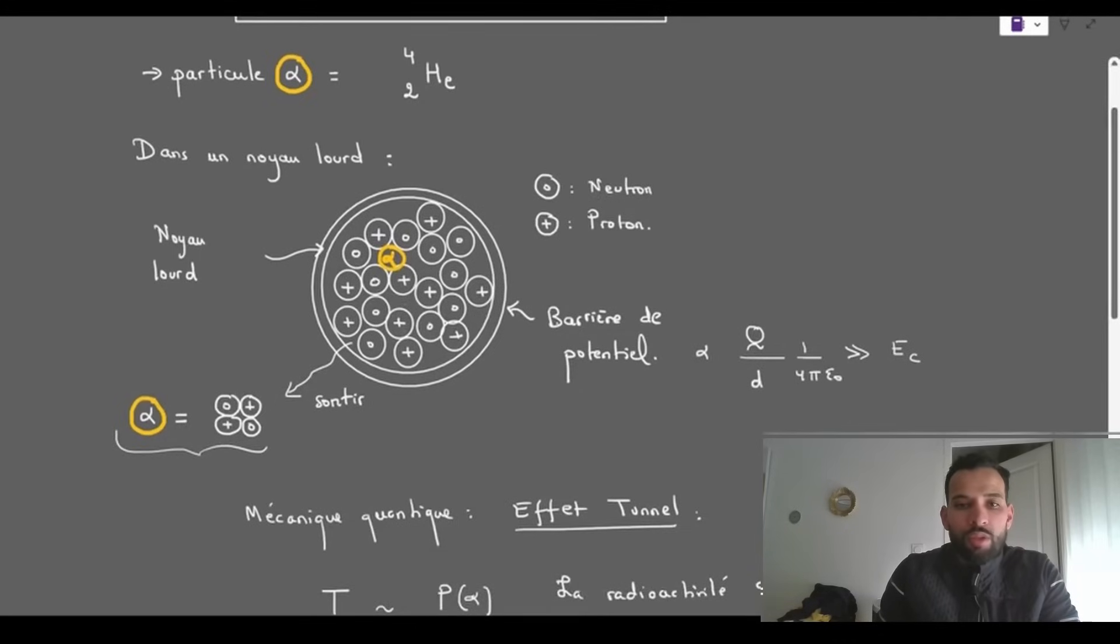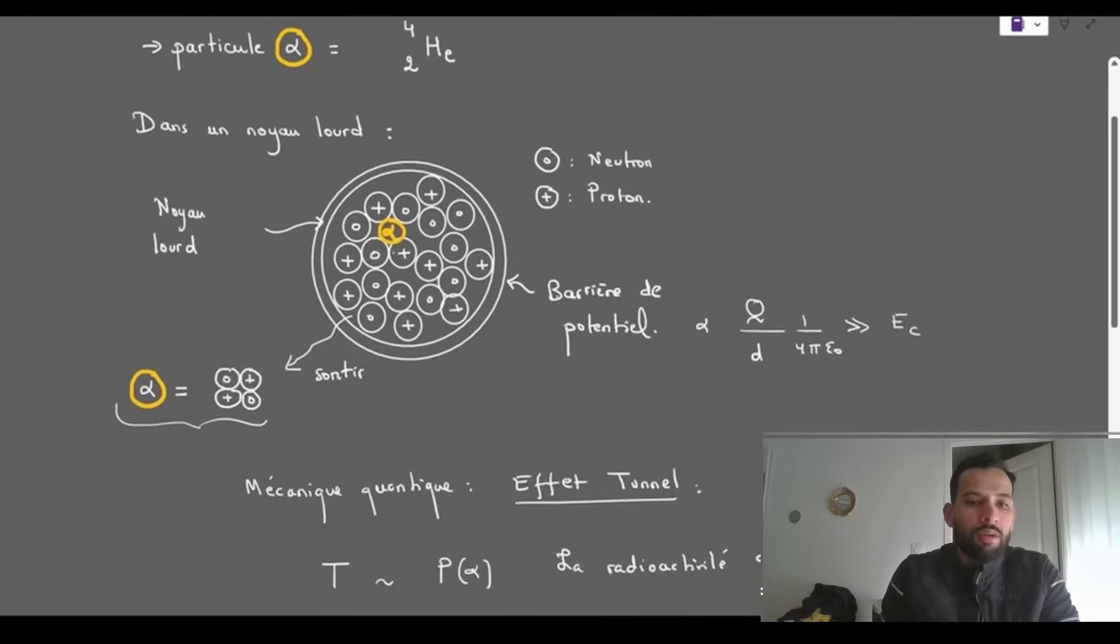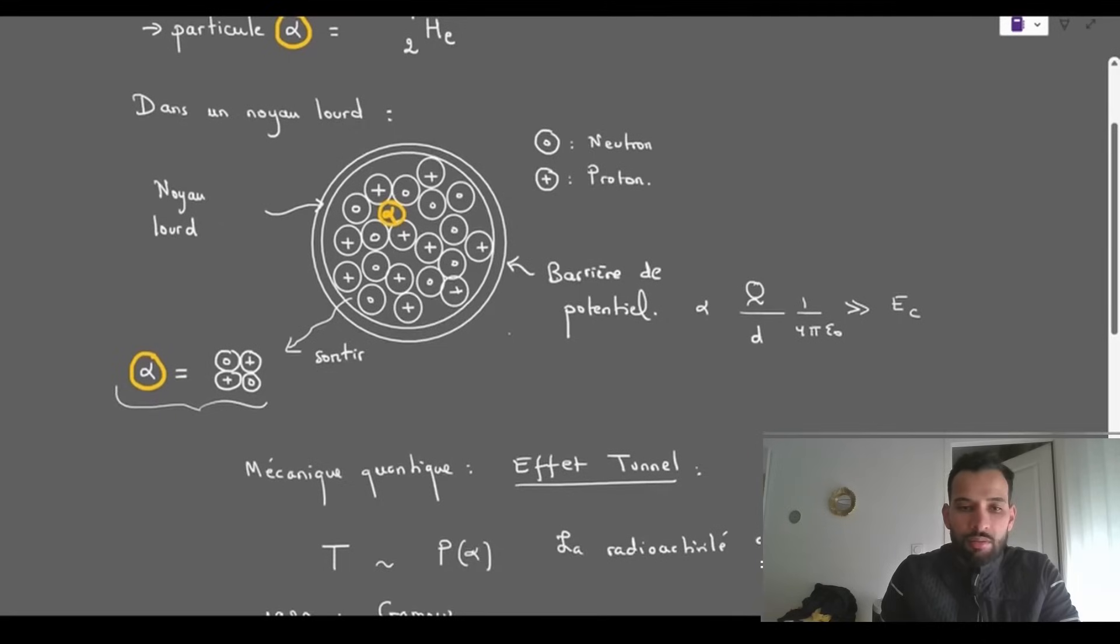However, according to classical mechanics, such ejection is forbidden. The alpha particle is confined inside the nucleus by a potential barrier of Coulombian origin.